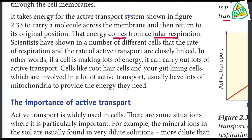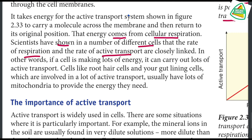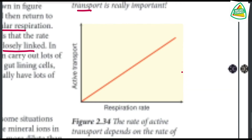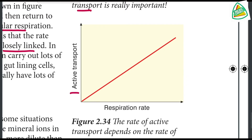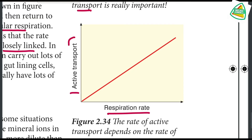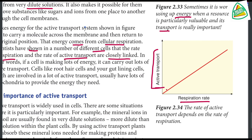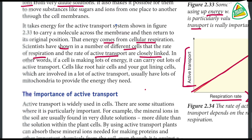Scientists have shown in a number of different cells that the rate of respiration and the rate of active transport are closely linked. Active transport and respiration are directly related — the respiration rate determines how much energy is available. When the respiration rate is high, the energy available is high.